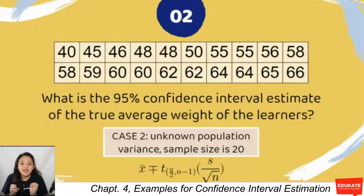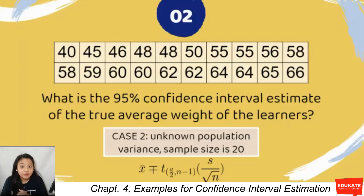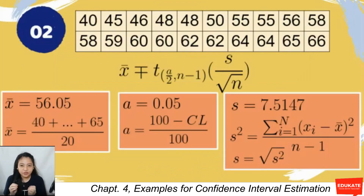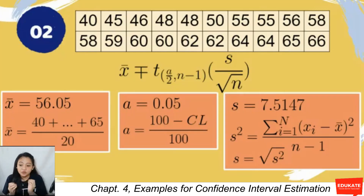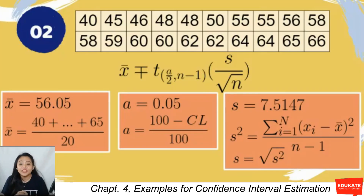For case two, the confidence interval estimate is sample mean ± tabular value from the t-table times the SE, where s is the point estimate of the population standard deviation. Since we have raw data, we compute the sample mean by adding all values and dividing by 20: (40 + 45 + 46 + … + 66) / 20, giving a sample mean of 56.05. The 95% confidence level gives alpha = 0.05.